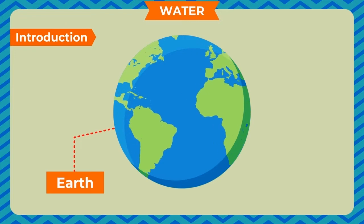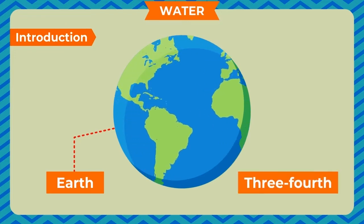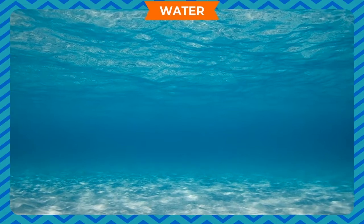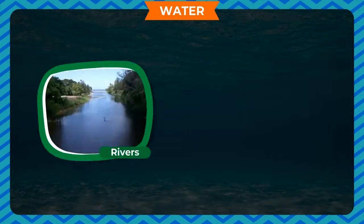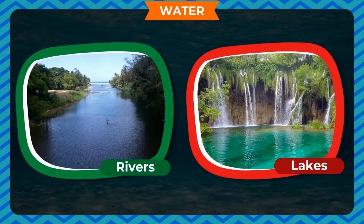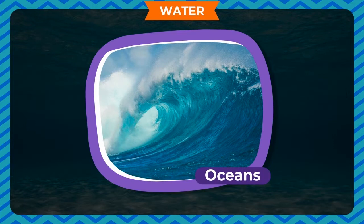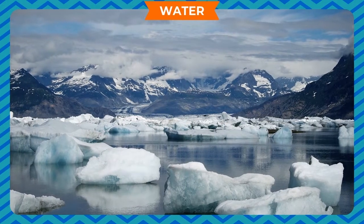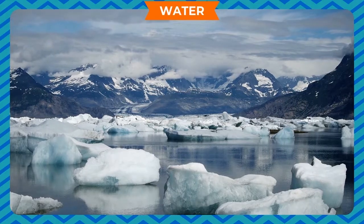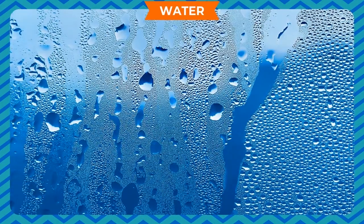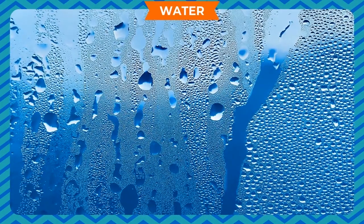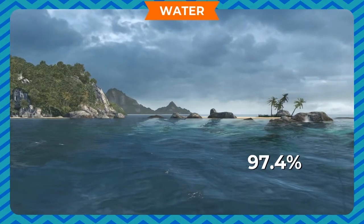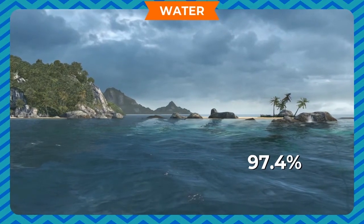Water introduction: About three-fourths of the earth's surface is covered with water. It is found in puddles, ponds, rivers, lakes, and oceans. It is present under the ground and in glaciers in the form of ice, and also in air in the form of water vapor. 97.4 percent of the available water is in seas and oceans.